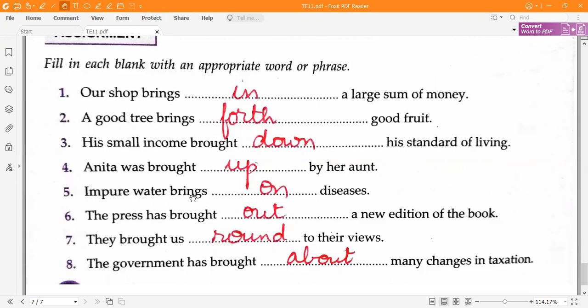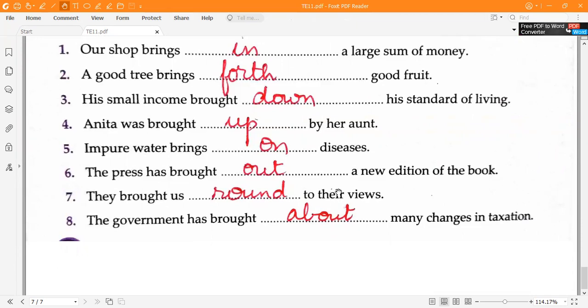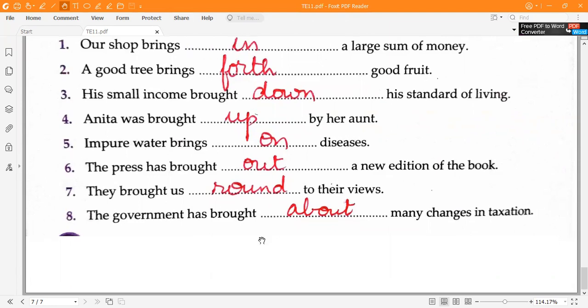Fifth one, impure water brings on diseases. Sixth one, the press has brought out a new edition of the book. Seventh one, they brought us round to their views. Eighth one, the government has brought about many changes in taxation.